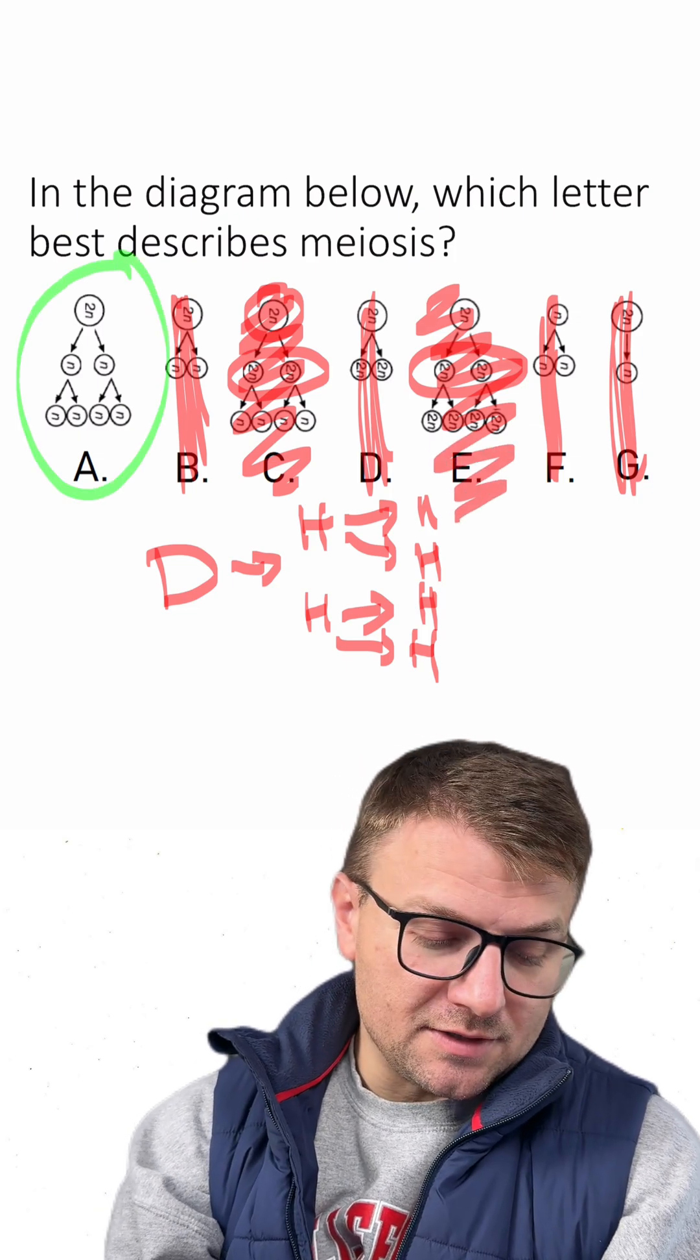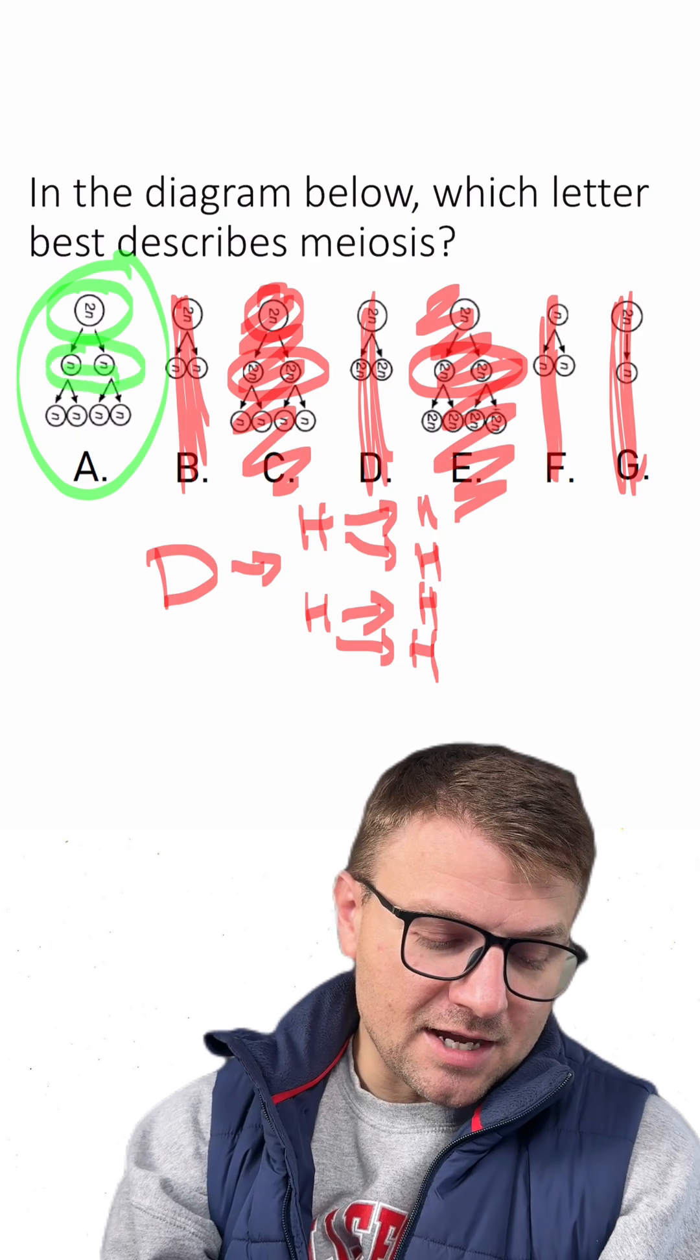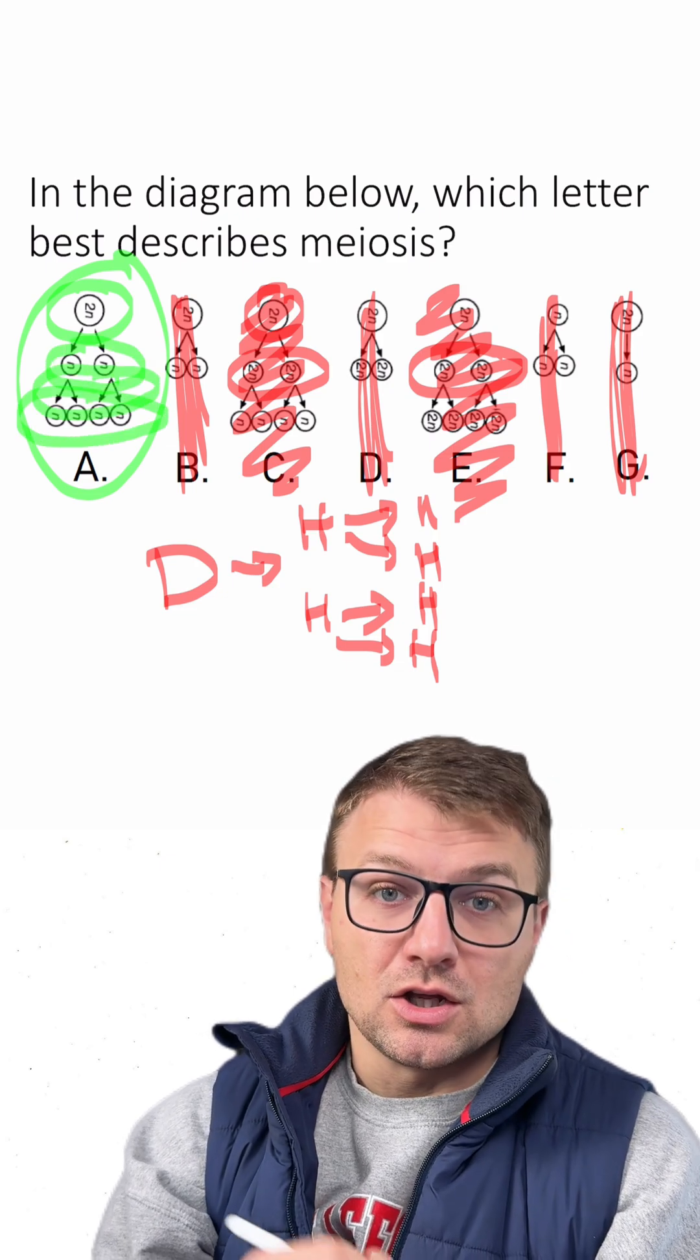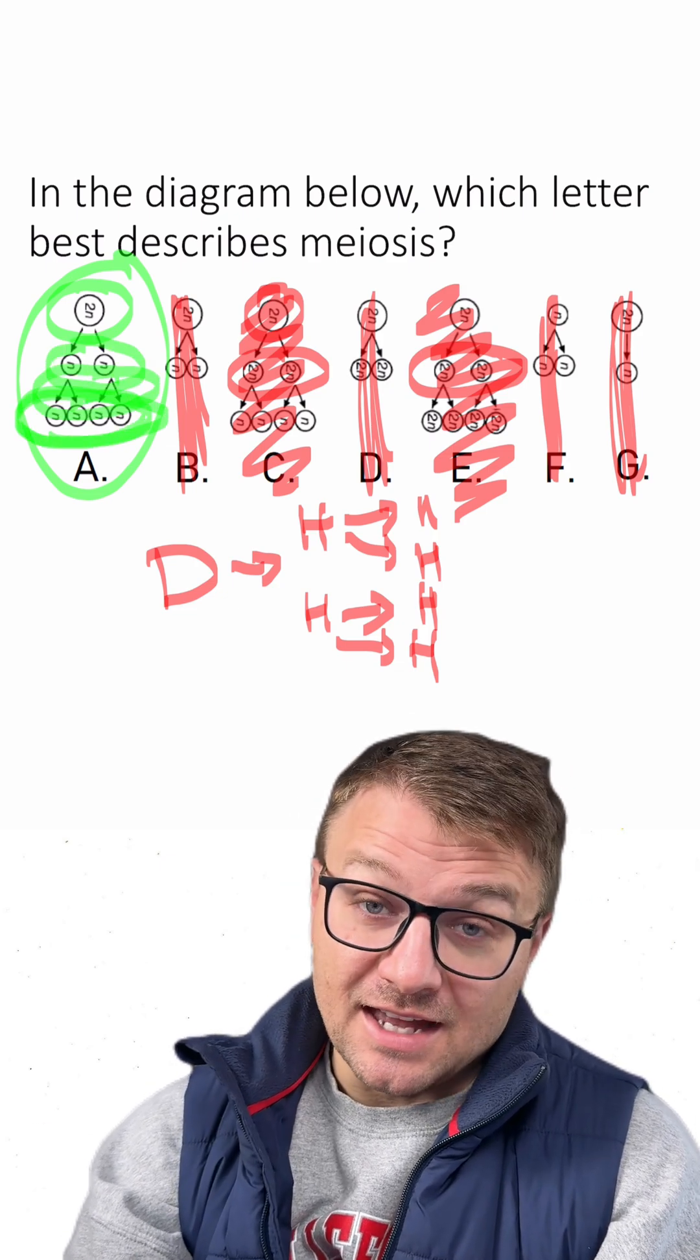This means A is the right choice since the first round of division creates two haploid cells and the second round of division also creates two more haploid cells, which means there's four haploid cells at the end.